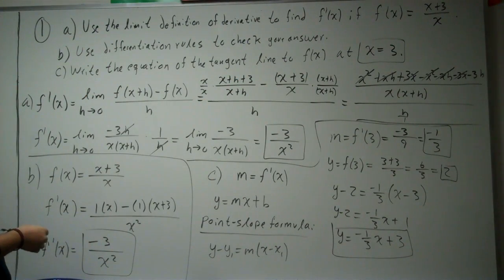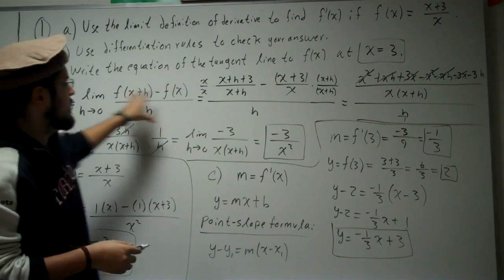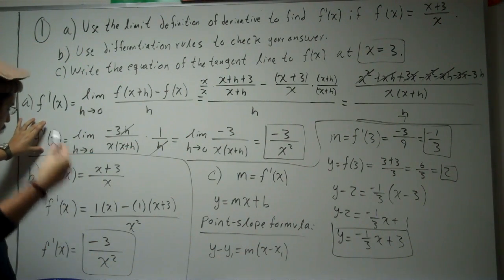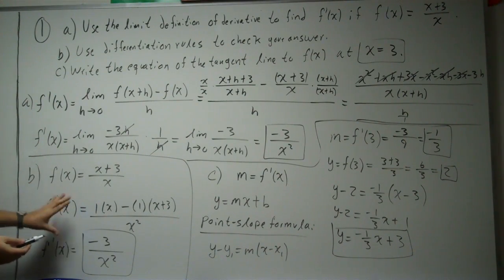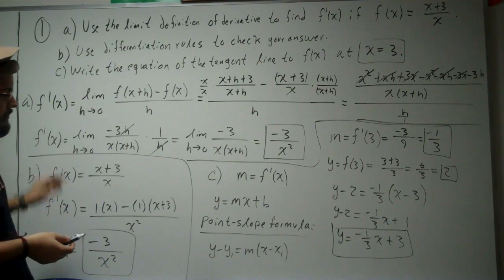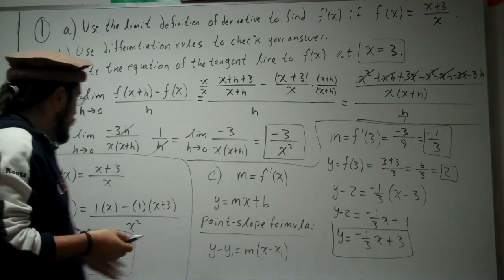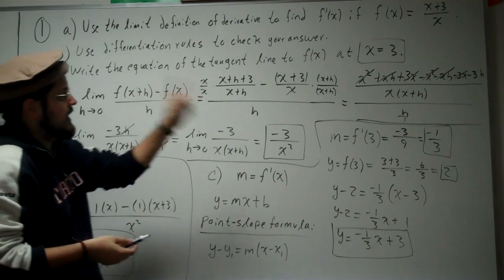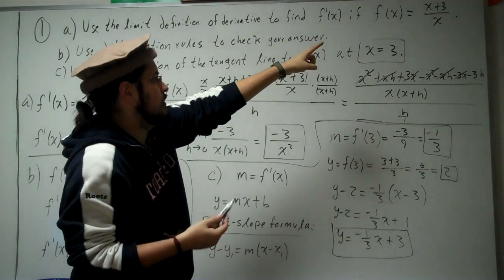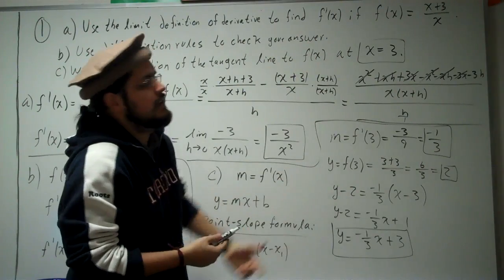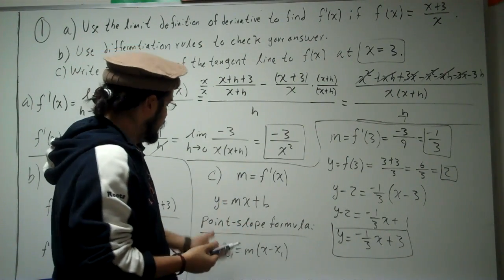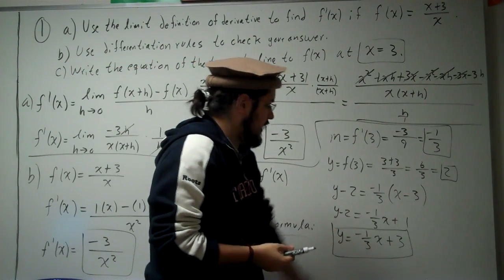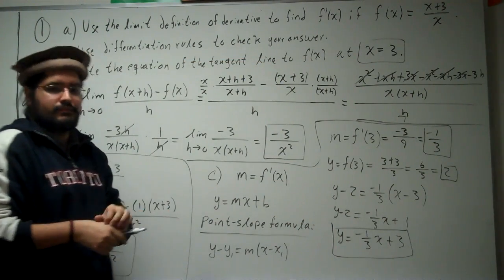To recap: in part A we used the limit definition to derive f prime of x. In part B we verified the answer using differentiation rules. In part C we found the tangent line at x equals 3 by evaluating f prime at 3 to get the slope, plugging x into the original function to get y, and using the point-slope formula.